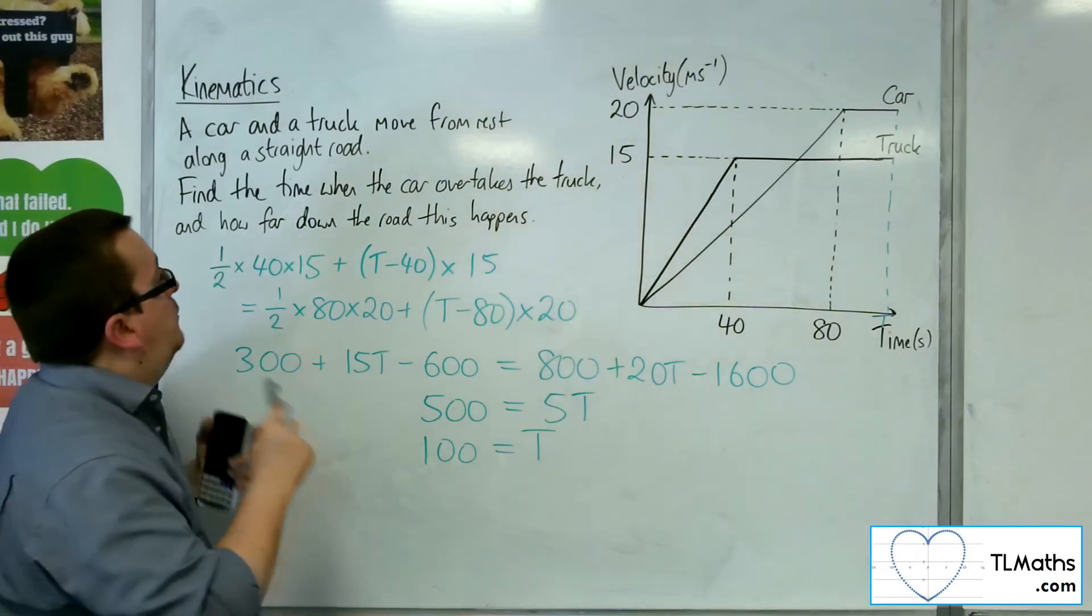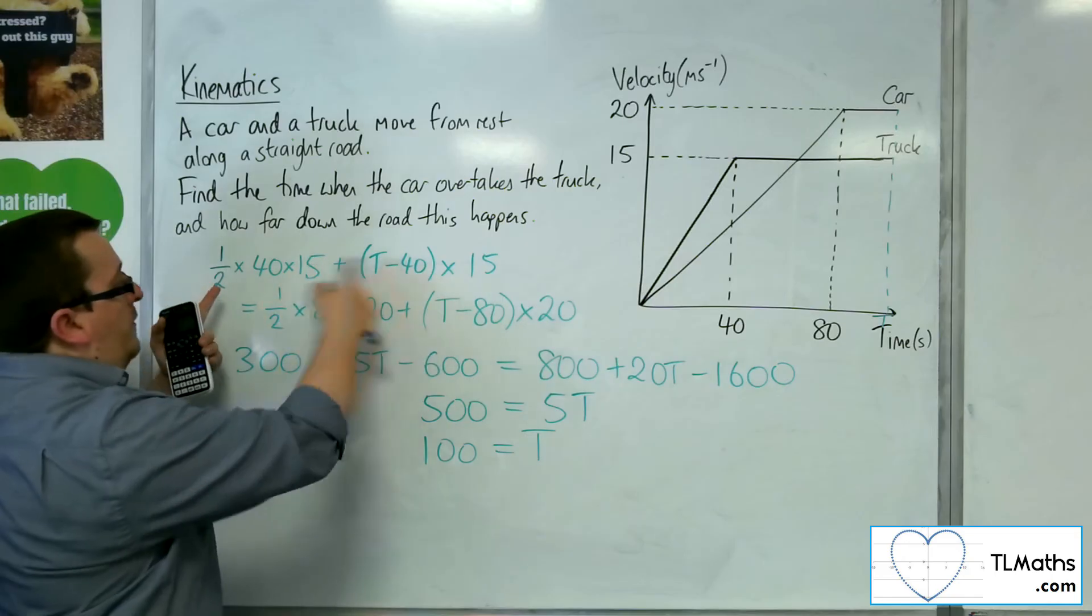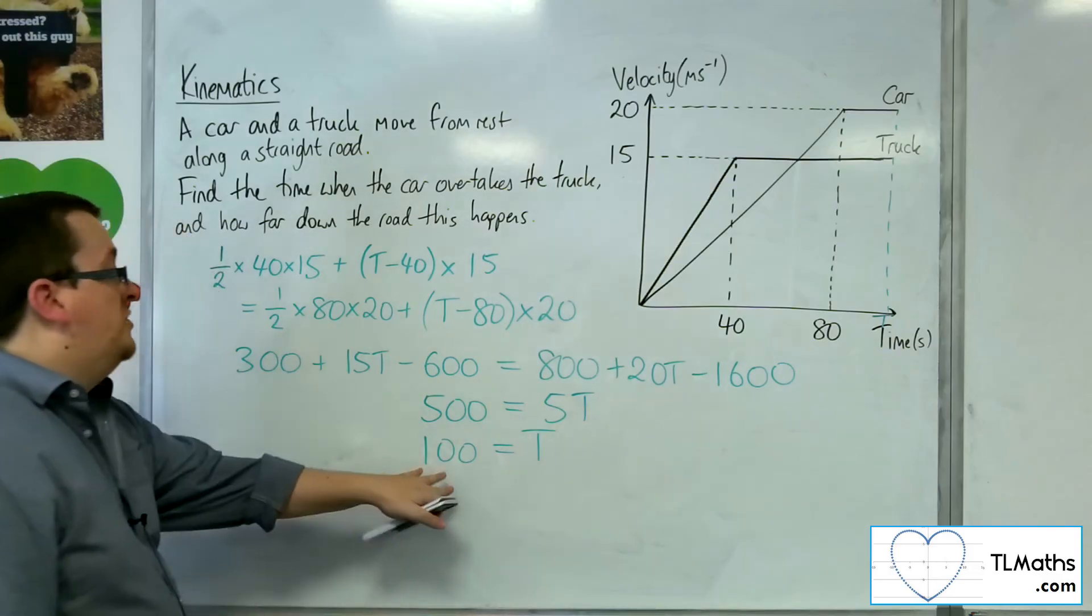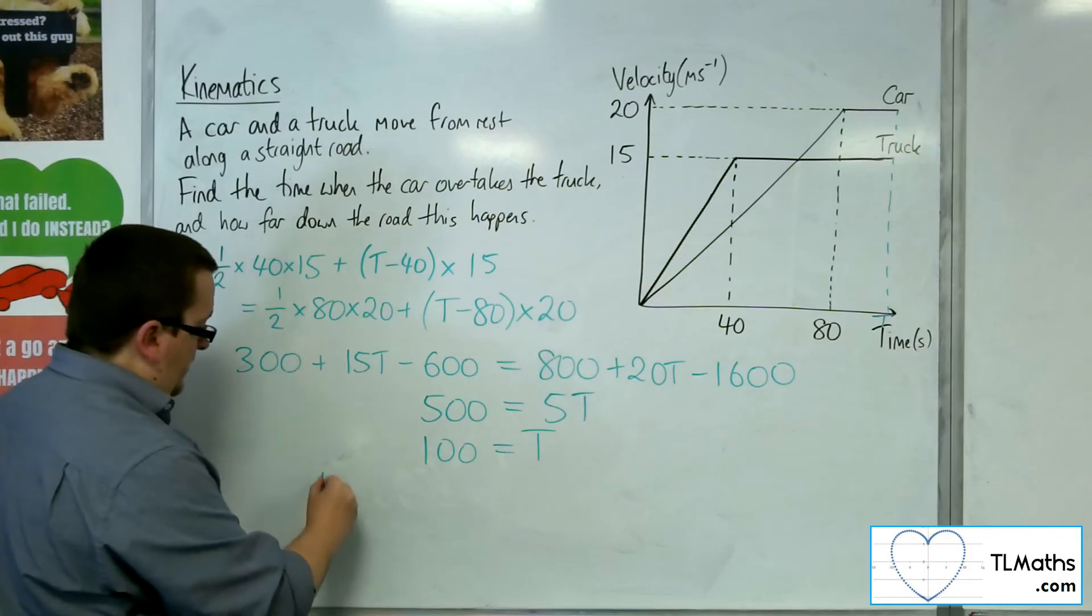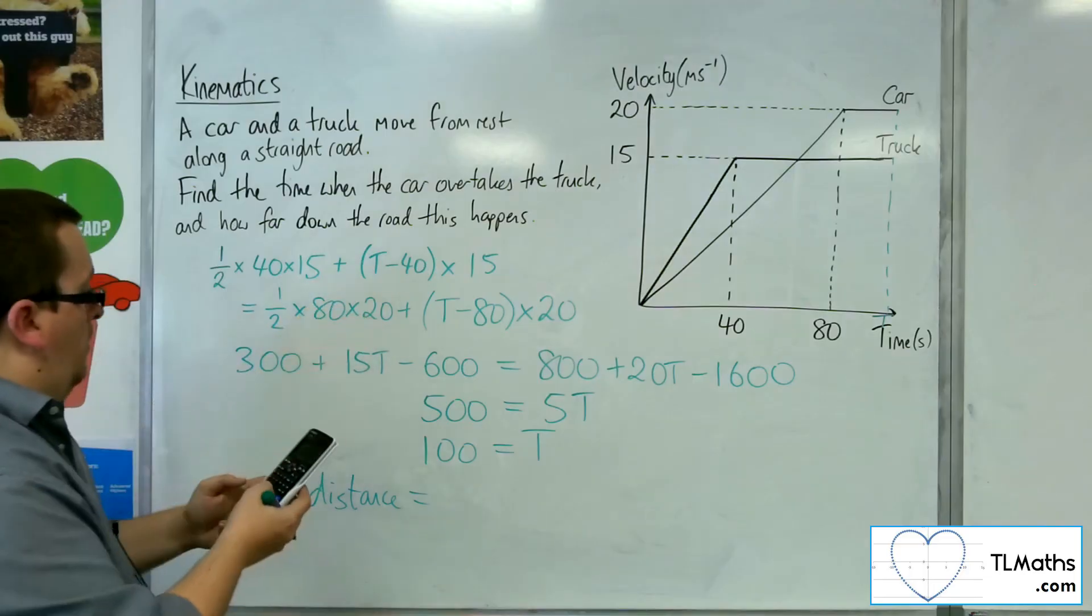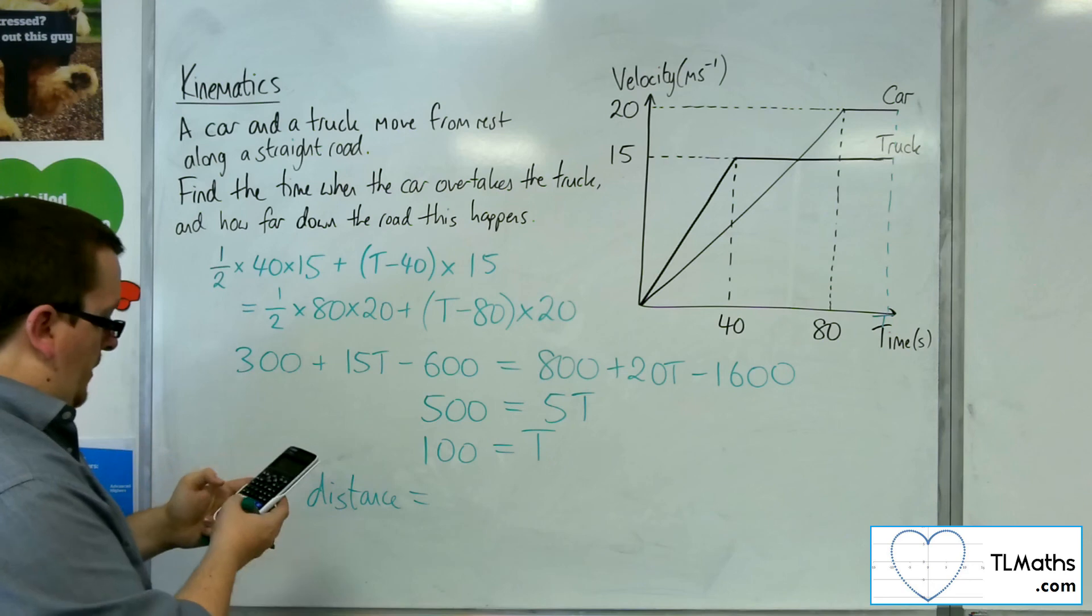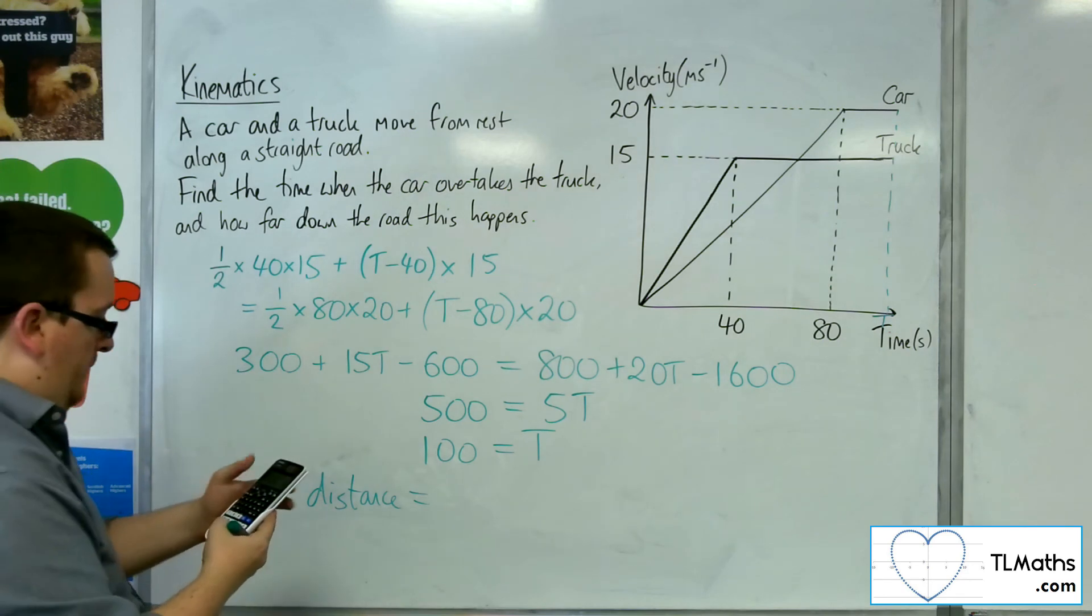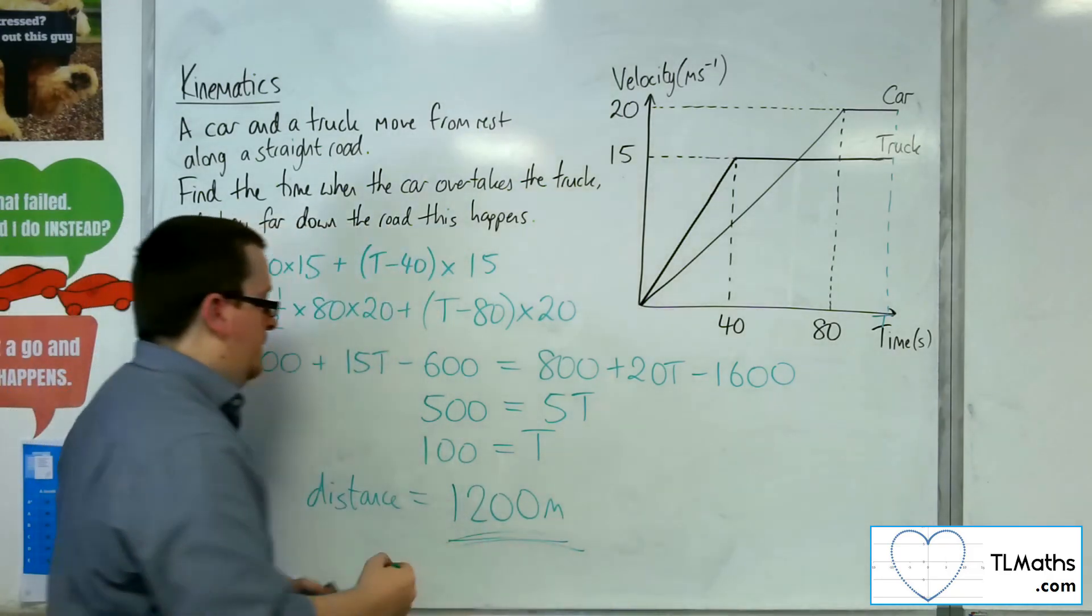So how far along the road does this actually happen? So remember, one of these is the distance the truck has traveled, that's the distance the car has traveled. I just need to substitute T as 100 into either of those. So the distance, I'm going to substitute it into that top one, which we actually simplified to this. So we've got the 300 plus 15 lots of 100 take away 600, and that gets me 1,200 meters.